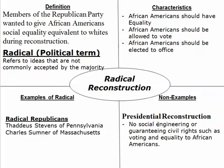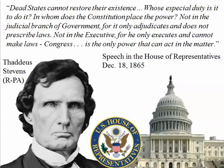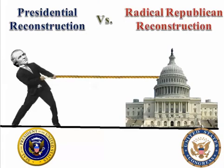Non-examples were Presidential Reconstruction under Lincoln and Johnson, because those two believed that the government shouldn't be doing social engineering or guaranteeing civil rights to African Americans — such as voting and equality — and that should come later; the government had no business doing that.